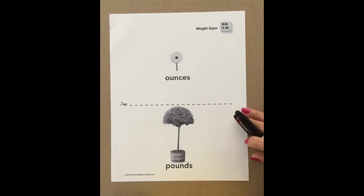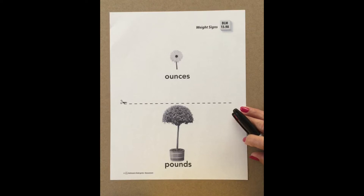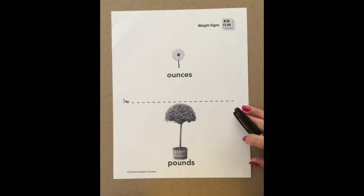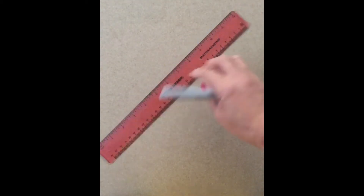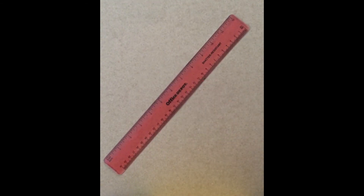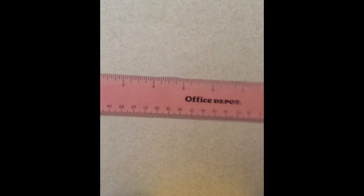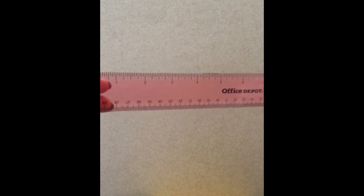Newborn babies are measured in ounces, and some are in pounds, but you are heavier than babies so you are measured in pounds. So there's another way to measure things — we've talked about weight, height, length, and the same size. Now we are going to talk about this — who can tell me what this is? This is called a ruler, and hopefully you have one at home because you are going to measure a lot of things with it.